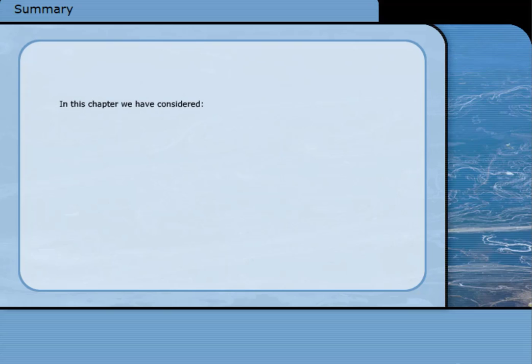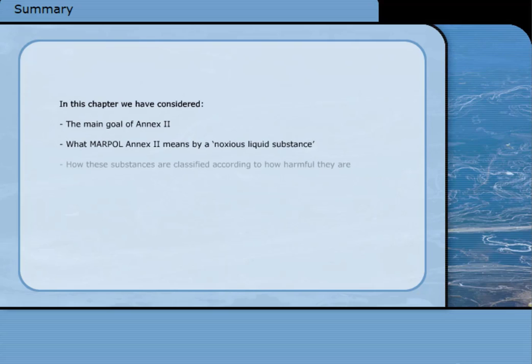We have now reached the end of this chapter on MARPOL Annex 2, as it applies to ships carrying noxious liquid substances in bulk. We have considered the main goal of Annex 2, what MARPOL Annex 2 means by a noxious liquid substance, and how they are classified according to how harmful they are, and the likely sources of operational and accidental pollution.